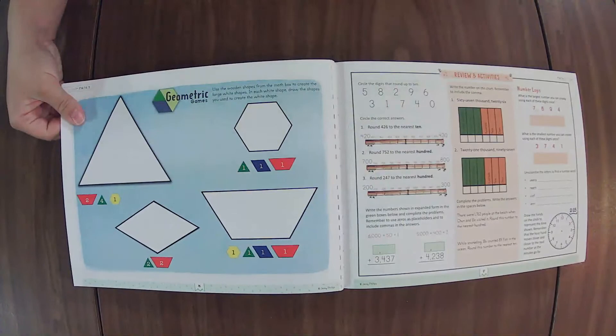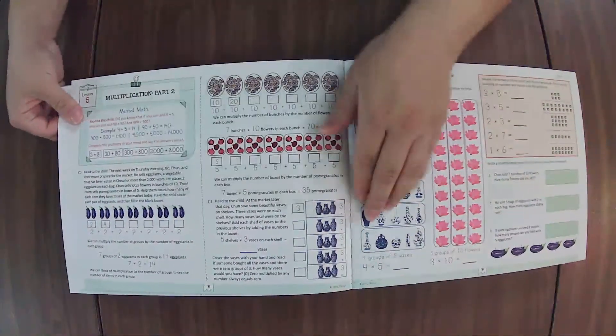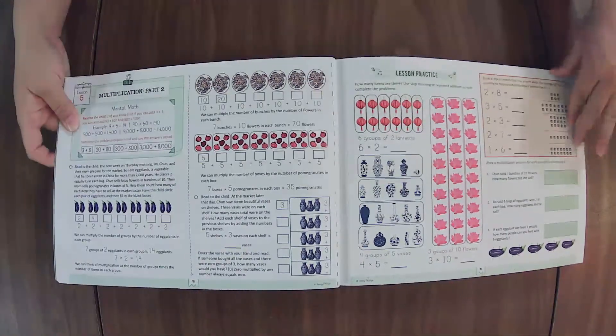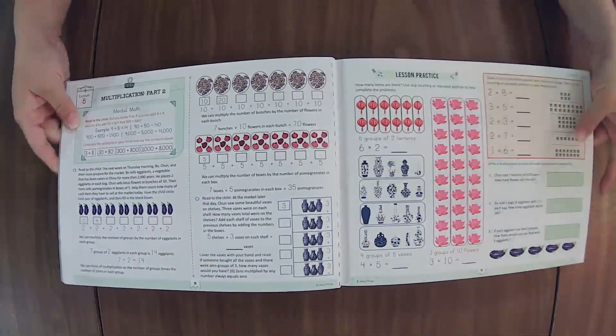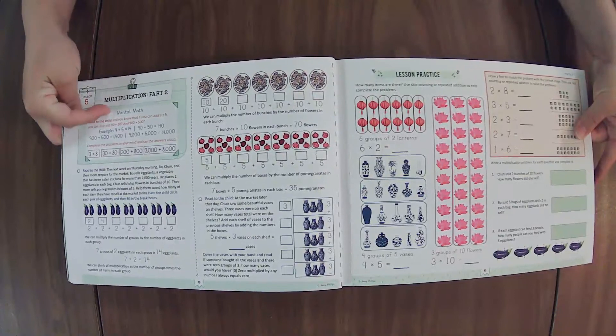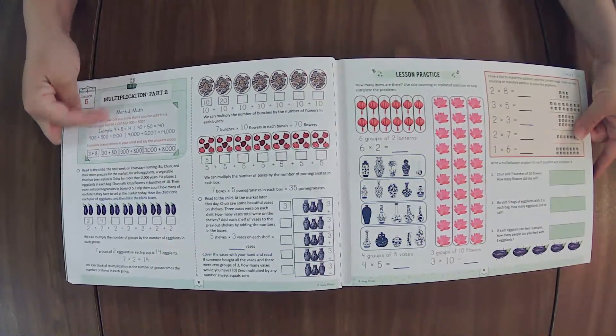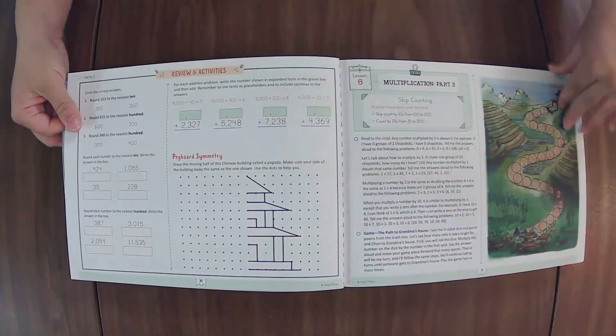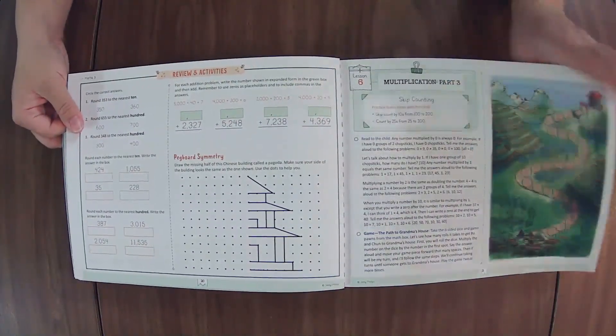This top little box here in each of the lessons is kind of like a review of concepts that either they're working on or should know at this point. These are more like mental math type things, so those are things that you can either review with your kiddo if they need it, or periodically as it comes around.